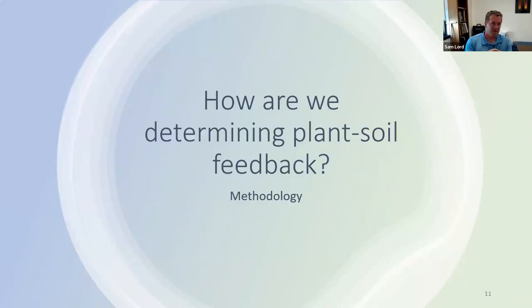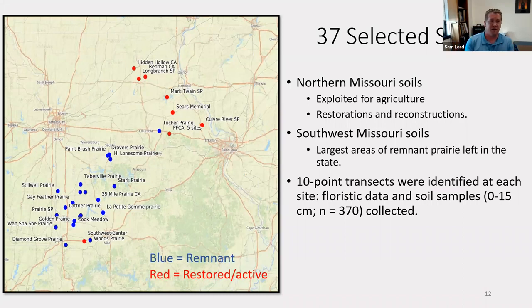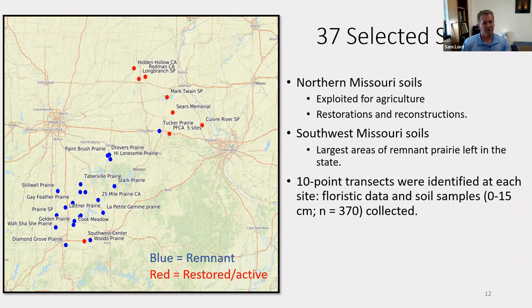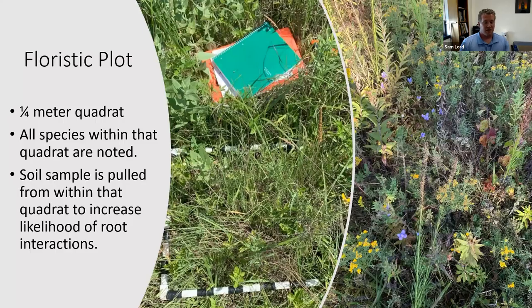How are we going about determining plant-soil feedback? This is the methodology. This is a map of all the sites we sampled — 37 sites across Missouri. The red are restored or active sites or reconstructions, and in southwest Missouri we have our largest tracks of remnant prairie left. I determined 10-point transects at each of these sites, collecting 10 samples at each one, starting from the top of the hill and moving downslope, to account for soils that interact with slope. We collected floristic data and soil samples — 370 soil samples paired with floristic data.